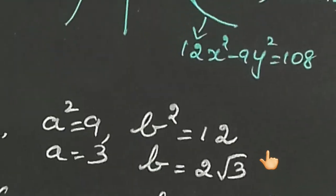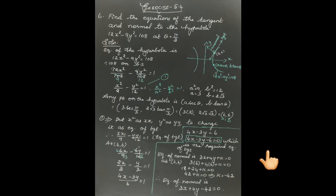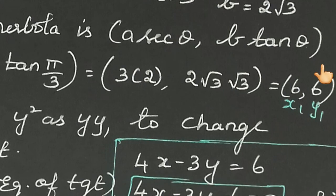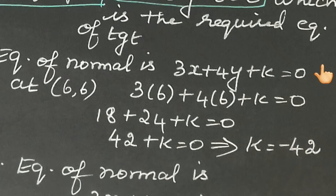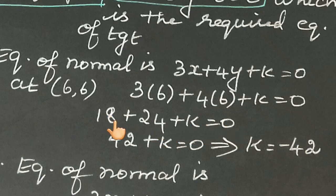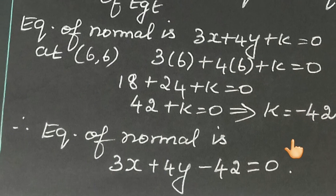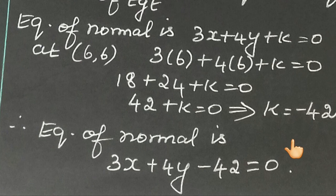The normal passes through the point (6, 6). Substitute x equals 6 and y equals 6 into 3x plus 4y plus k equals 0: 3×6 plus 4×6 plus k equals 0, giving 18 plus 24 plus k equals 0, so 42 plus k equals 0, therefore k equals minus 42. Thus the required equation of the normal is 3x plus 4y minus 42 equals 0. Thank you, children.